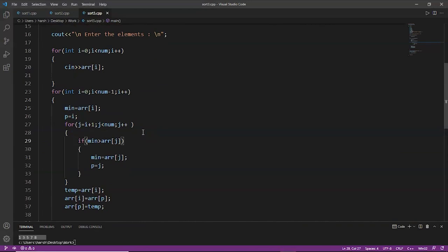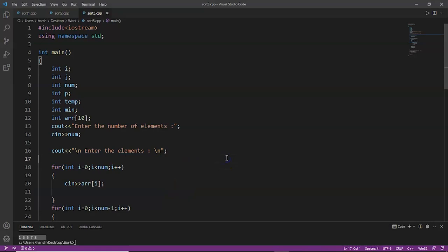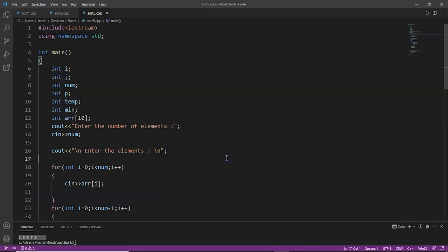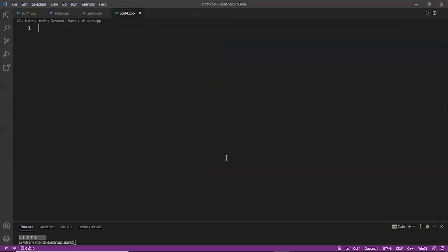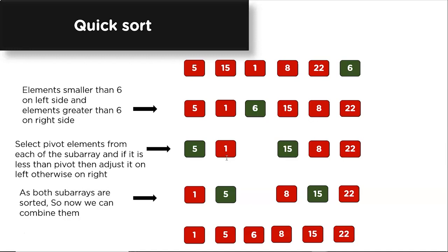Now let's do an example of quick sort. We create a new file named sort4.cpp. As we know, quick sort follows the divide and conquer algorithm. We select a pivot element — here we select 6 — elements smaller than 6 go to the left, elements greater go to the right. The same process is applied to each partition or sub-array, and when combined we get a sorted array.